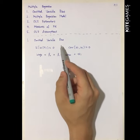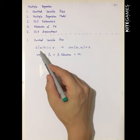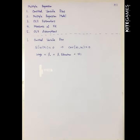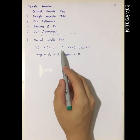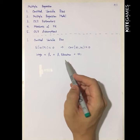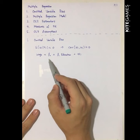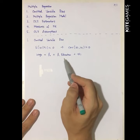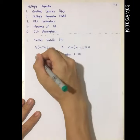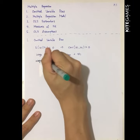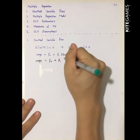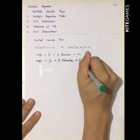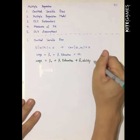The first is the omitted variable bias. Our first OLS assumption is that the expected value of Uᵢ given Xᵢ is zero, such that the covariance between Uᵢ and Xᵢ is equal to zero. But this is difficult to satisfy if we omit some key variables. For example, wage equals beta 0 plus beta 1 times education plus Uᵢ. This is reasonable because more education usually leads to higher wages. However, a better model includes ability: beta 0 plus beta 1 times education plus beta 2 times ability plus the error term Vᵢ.